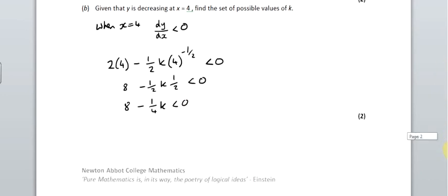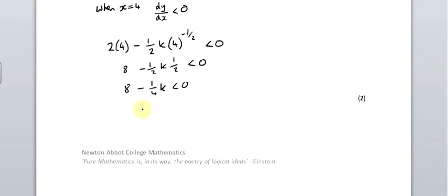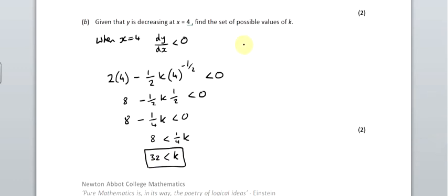Add that across. Be very careful when you're dealing with inequalities that you don't multiply or divide by a negative number because that switches the sign. Multiply by 4. So I've got 32 and k is larger than 32 and that's my answer. I knew it was going to be an inequality because they told me in the question. It's a set of possible values and this is a set of values. K is bigger than 32. And that's it.